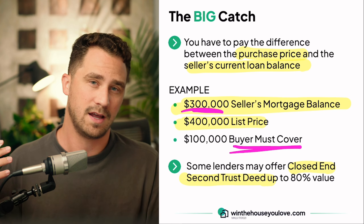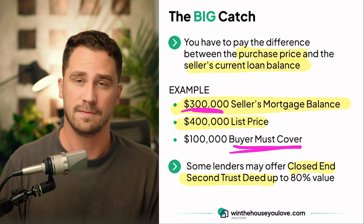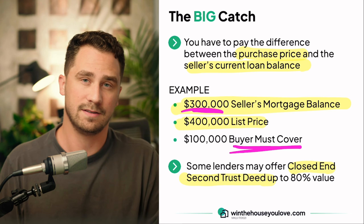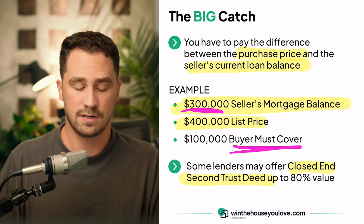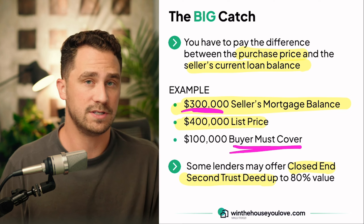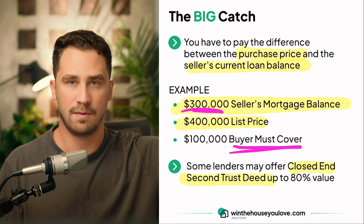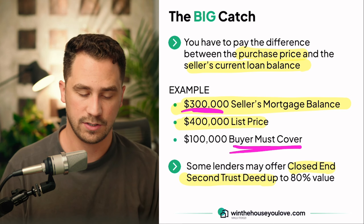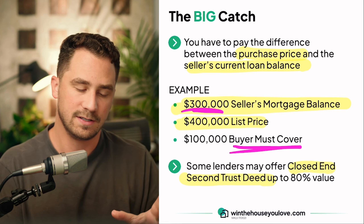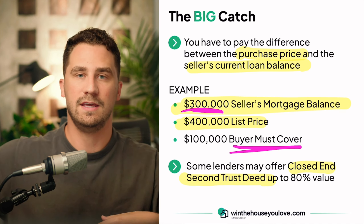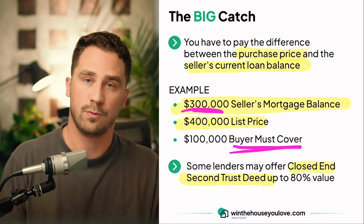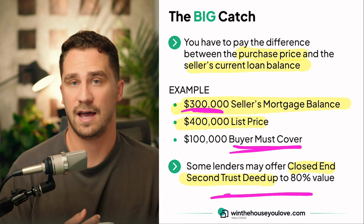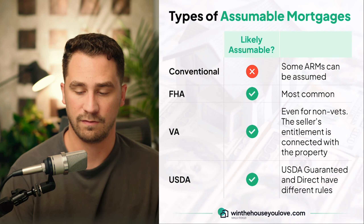You may have to bring that amount to closing as a down payment to cover the difference. There are some lenders that will offer a second mortgage to help you cover that difference, but they usually still expect you to come with 20% as a down payment — they're not going to give you the full amount to cover it. This is up to the lender, and you can't just go get this with any company. Most of the time you'll have to check with the seller's current mortgage company.